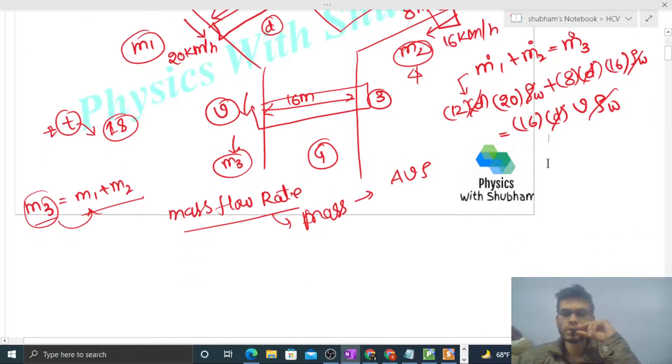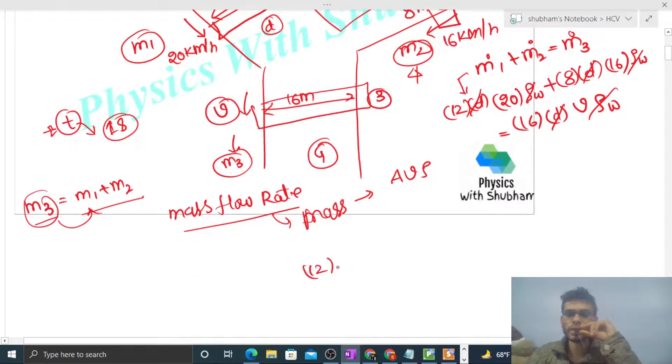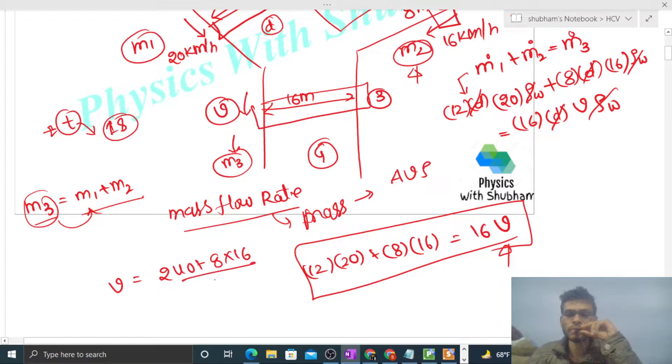So here you can find out the value of average speed in river Ganga. That will be 240 plus 8 times 16 divided by 16.